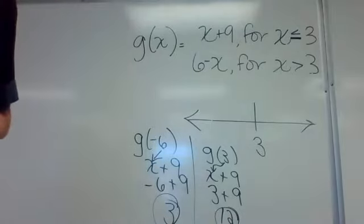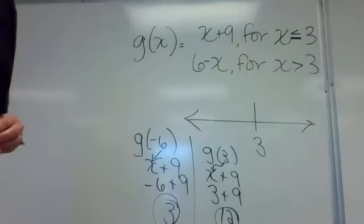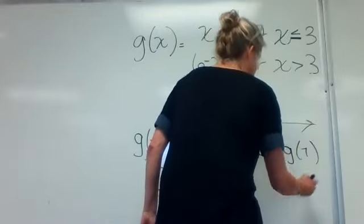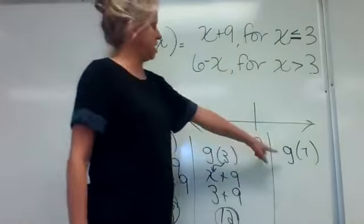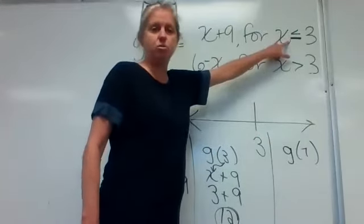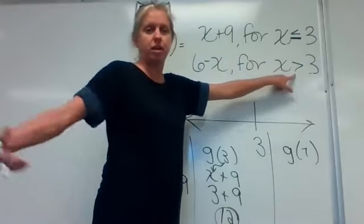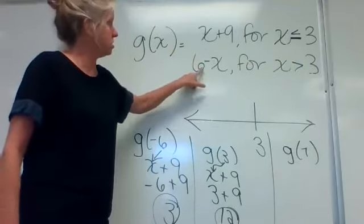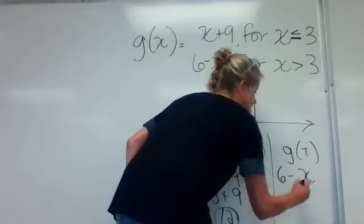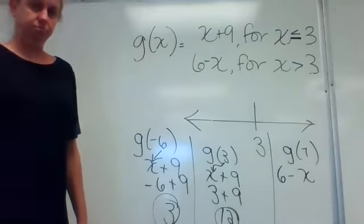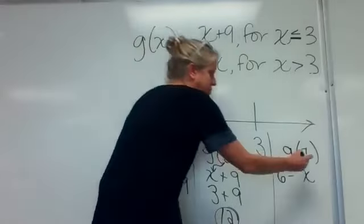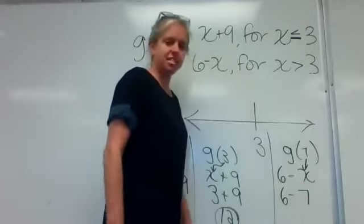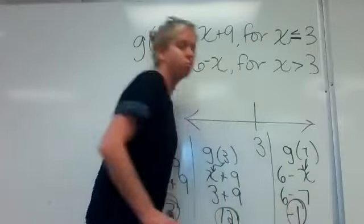The last one is g of seven. Seven is not less than or equal to three — it's greater than three, so it comes into the six minus x part. Once I find the part, I plug seven in for x: six minus seven gives me negative one.